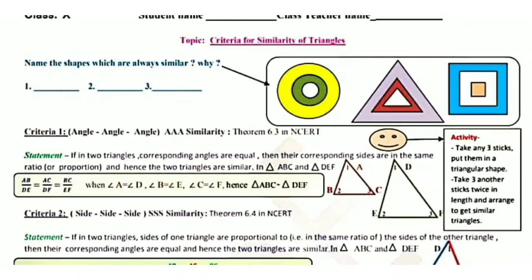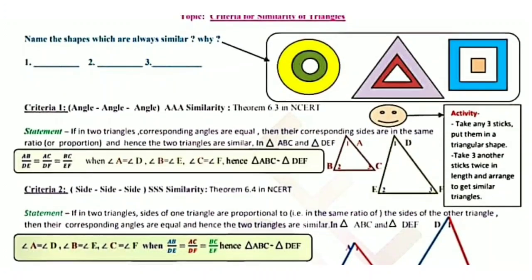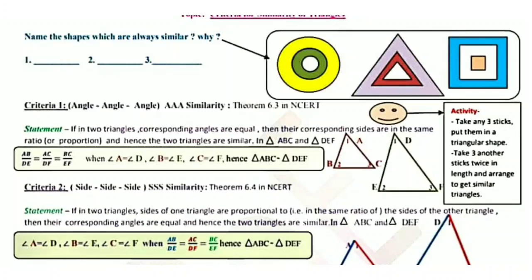Now criteria number two: Side-Side-Side, or SSS similarity criteria, which is Theorem 6.4 in NCRT. In this criteria, if the corresponding side ratios of two triangles are equal, then the corresponding angles will be equal and the two triangles will be similar. The statement is: if the sides of one triangle are proportional to the corresponding sides of the other triangle, then their corresponding angles are equal and hence the two triangles are similar.